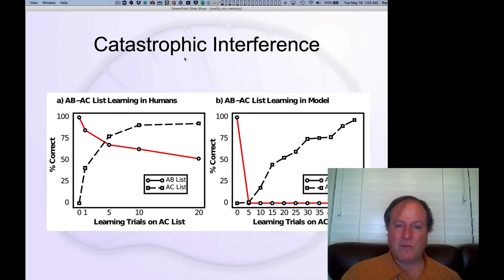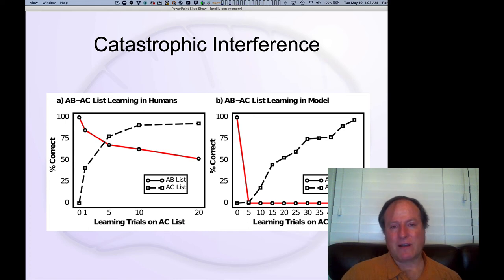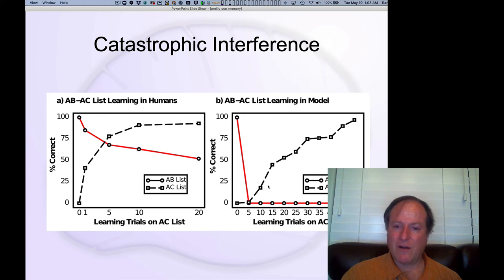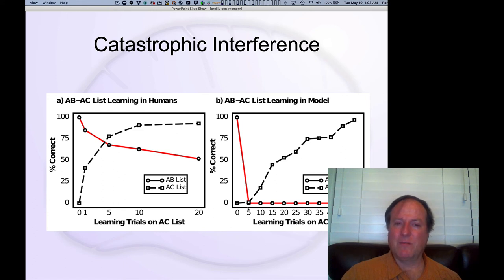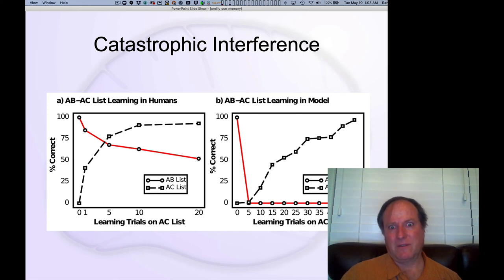Now pay attention to the title and this graph over here. This is the phenomenon of catastrophic interference — a very, very dramatic level of interference such that even before we get off the ground on the A-C list, the prior memory for the A-B items has completely evaporated, just been obliterated. It's really a huge, catastrophic level of interference.